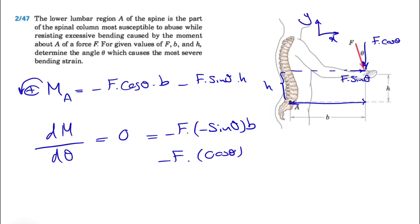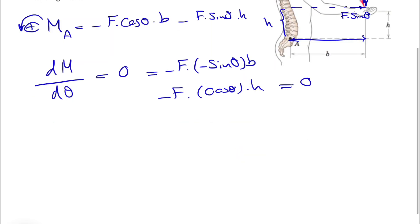From here, basically our F times sine of theta times b is equal to F times cosine of theta h. You can cancel out the F.